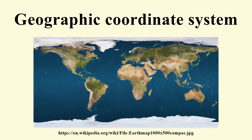The latitude of a point on the Earth's surface is the angle between the equatorial plane and the straight line that passes through that point and through the center of the Earth. Lines joining points of the same latitude trace circles on the surface of the Earth called parallels, as they are parallel to the equator and to each other. The North Pole is 90 degrees north, the South Pole is 90 degrees south, and the zero-degrees parallel is designated the equator.